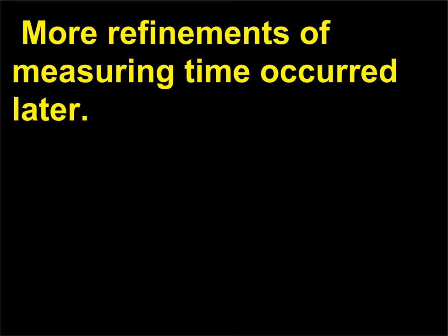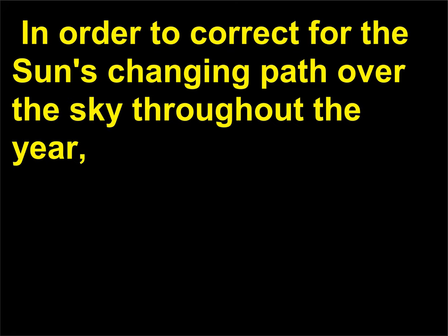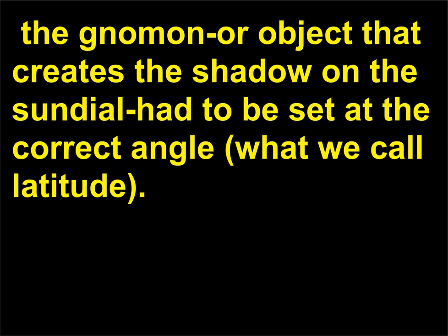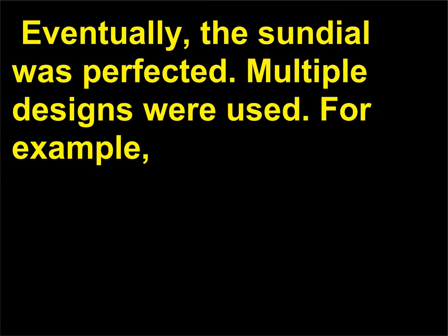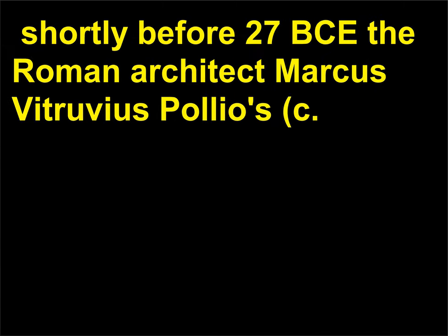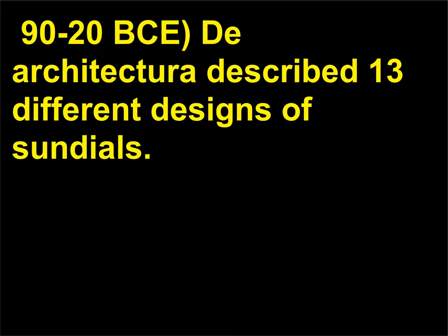More refinements of measuring time occurred later, in order to correct for the sun's changing path over the sky throughout the year. The gnomon — the object that creates the shadow on the sundial — had to be set at the correct angle, what we call latitude. Eventually the sundial was perfected and multiple designs were used. For example, shortly before 27 BCE the Roman architect Marcus Vitruvius Pollio (c. 90–20 BCE) described 13 different designs of sundials.